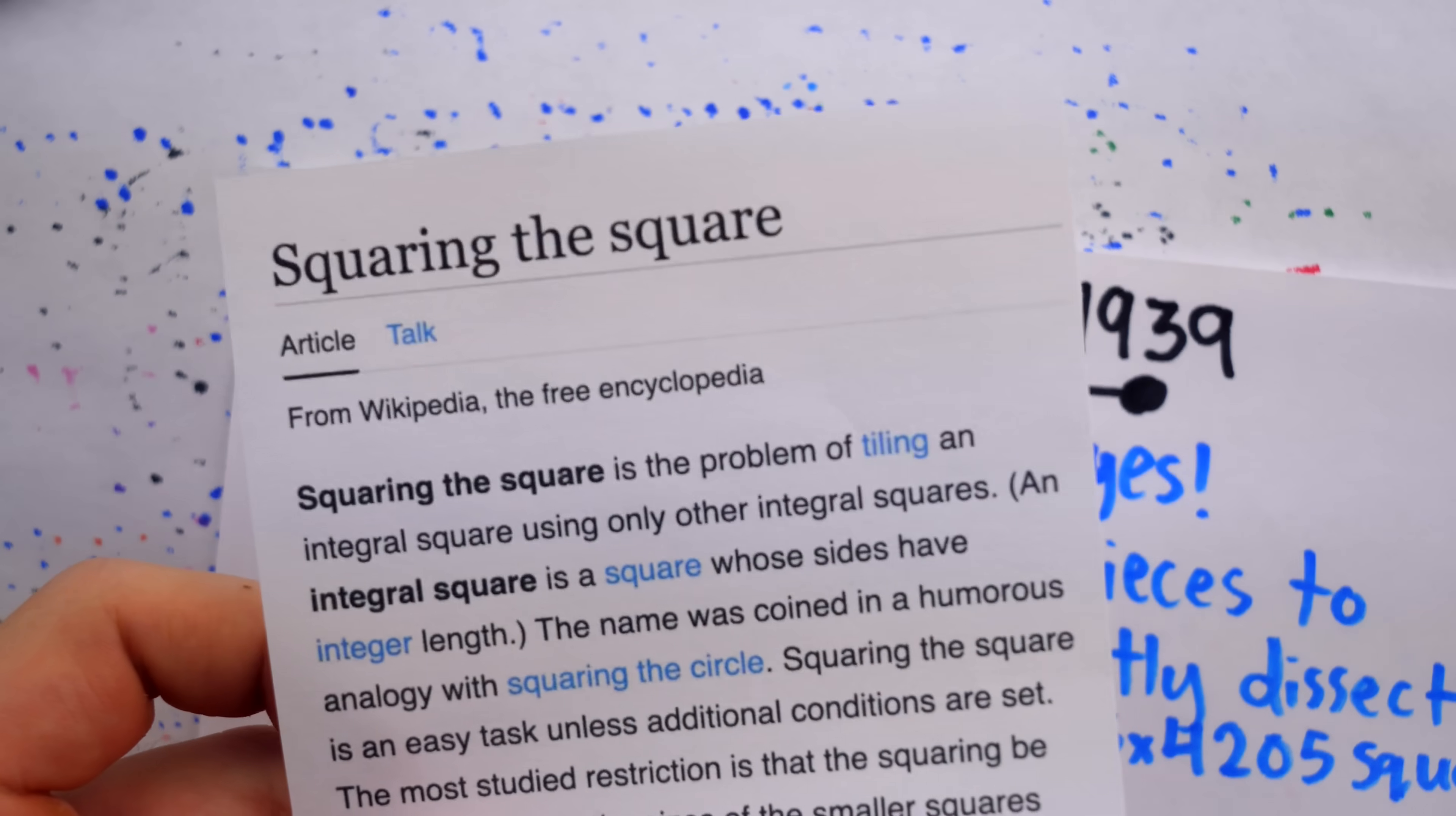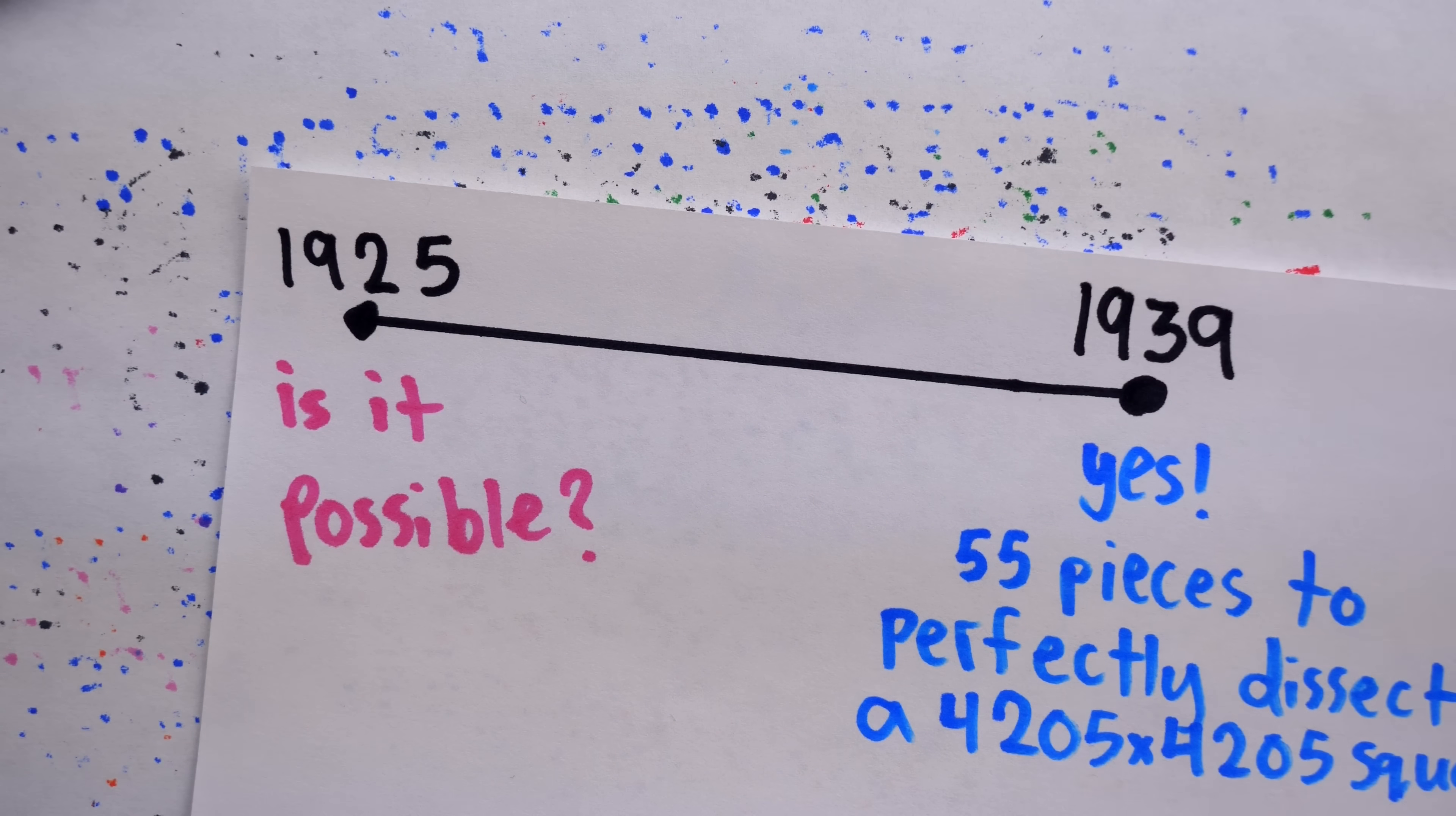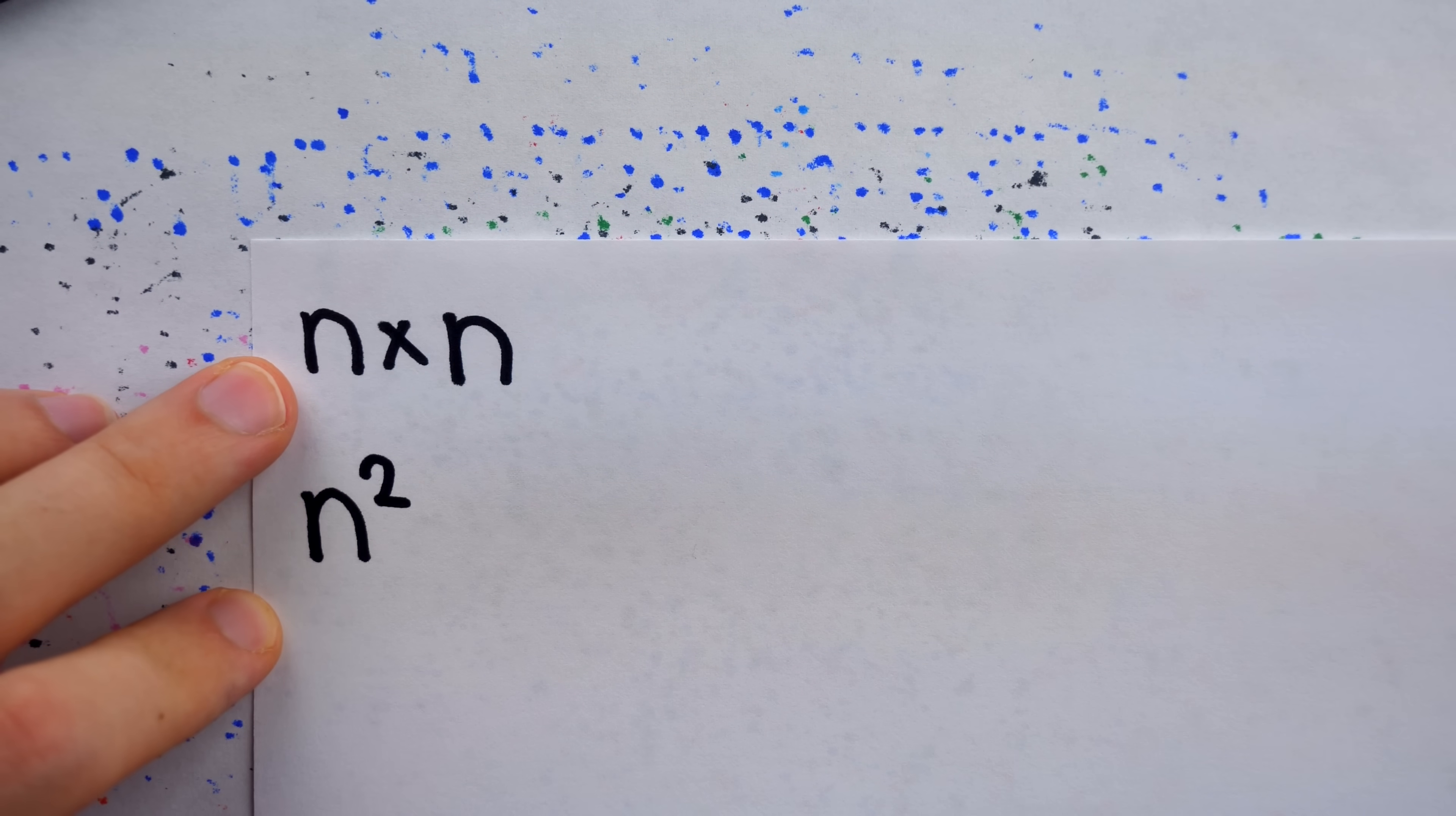Perhaps the biggest difference between the difficult squaring the square problem, and our classic Mrs. Quilt type problems, is that not every size square can be perfectly dissected, but certainly every size square can be cut into a Mrs. Perkins quilt. Again, trivially, any n by n square could be cut into n squared unit square pieces.